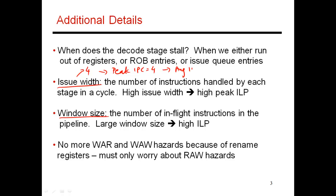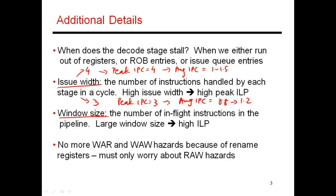The average IPC is most likely in the neighborhood of 1 to 1.5, much lower than the peak IPC. But if you increase your peak IPC, then during parts of the program with a lot of ILP — where many instructions are independent of each other — you can accelerate through those parts at high speed, boosting your overall average IPC. If you instead went with an issue width of three, your peak IPC would be lower, resulting in a lower average IPC of, say, 0.8 to 1.2. Increasing issue width increases your chances of executing really fast when there is lots of ILP.